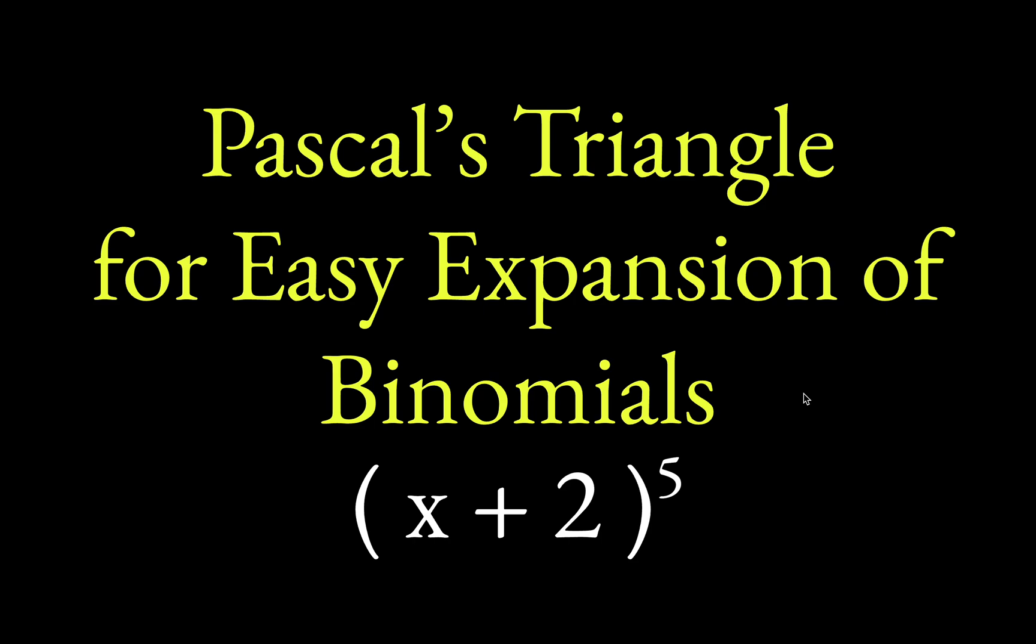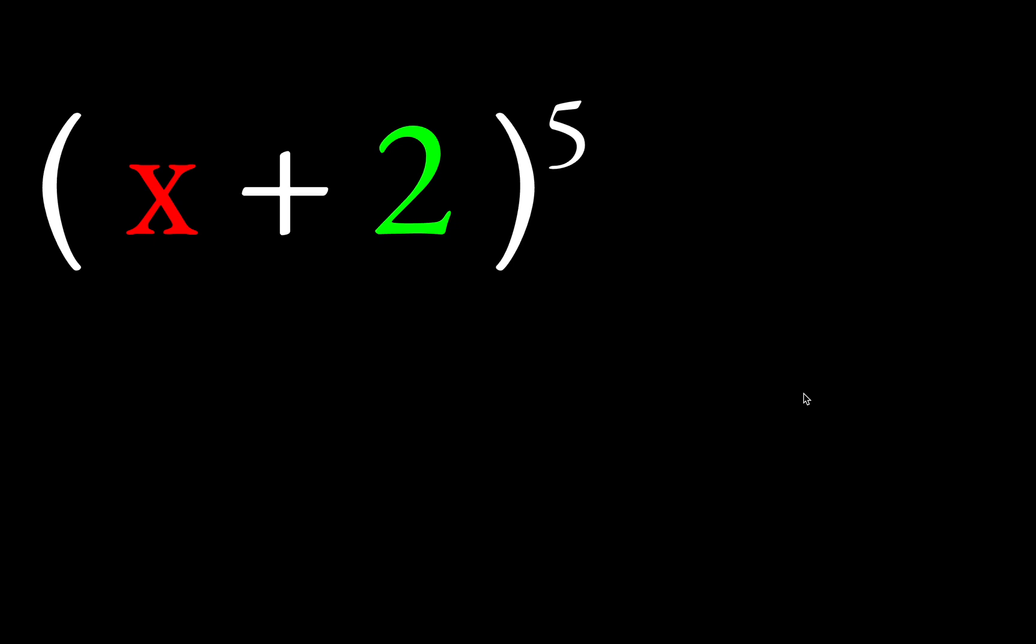A quick introduction to using Pascal's triangle to expand binomials. So suppose you need to raise x plus 2 to the fifth power. You could use the FOIL method to multiply that out, but that's very tedious, and so we're going to use another method.